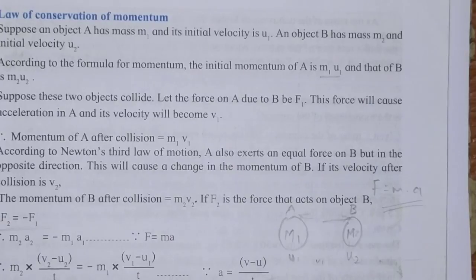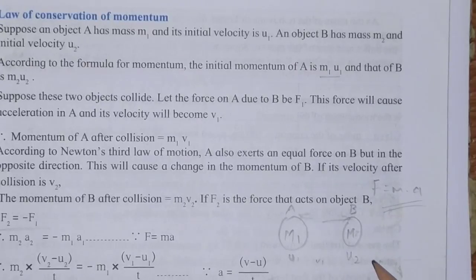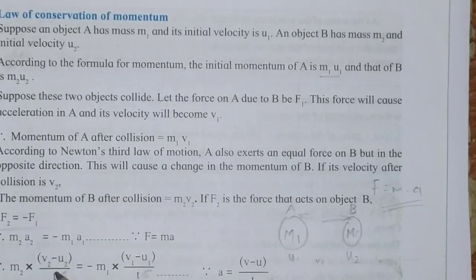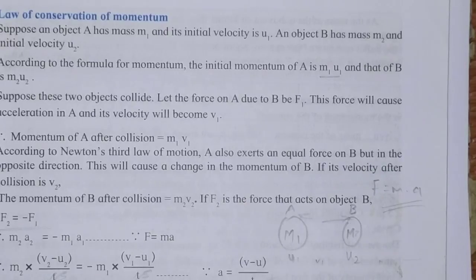After cancelling T from both sides, our next step gives us: M2 × (V2 − U2) = −M1 × (V1 − U1). Now we multiply M2 inside the bracket: M2V2 − M2U2. On the right side, we multiply −M1 inside: −M1V1, and minus times minus gives plus, so we get +M1U1. Remember the sign rules: minus × minus = plus, plus × plus = plus, plus × minus = minus, minus × plus = minus.